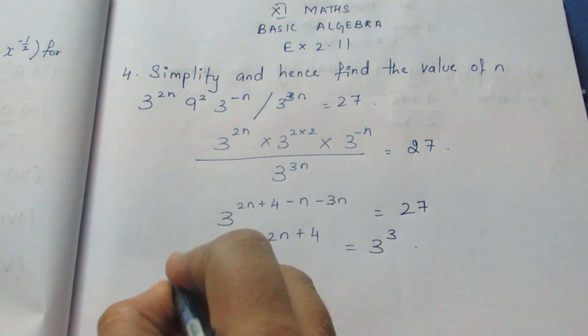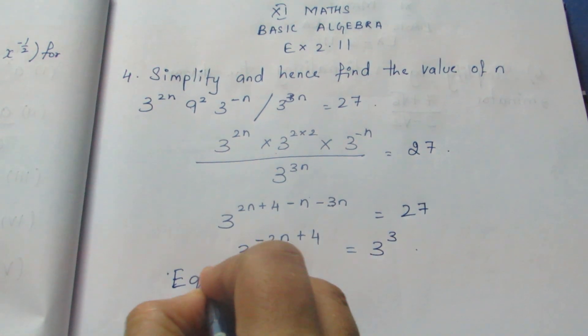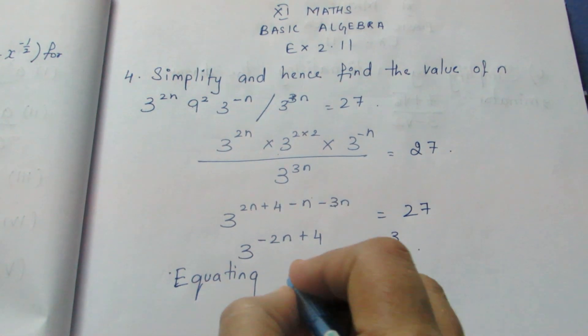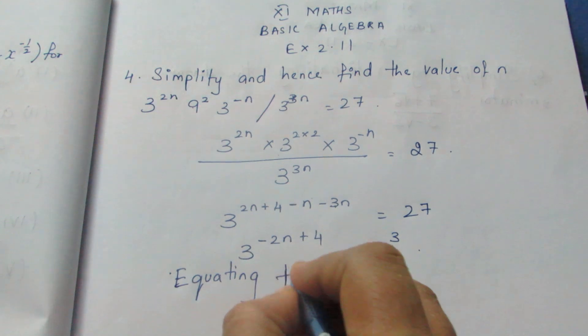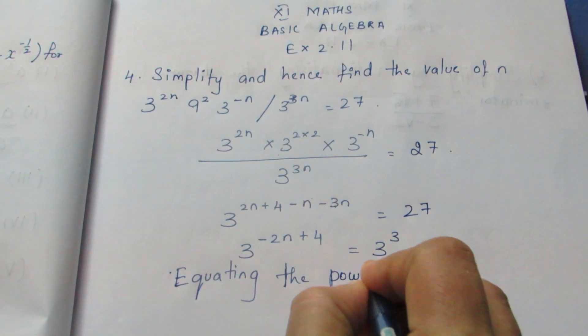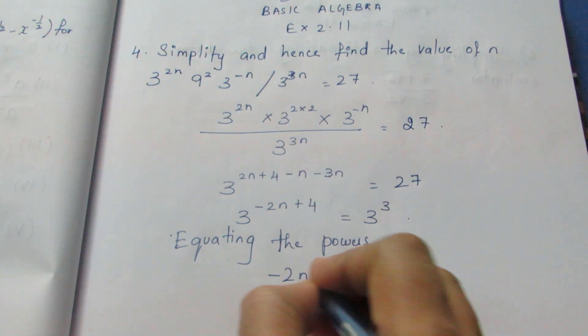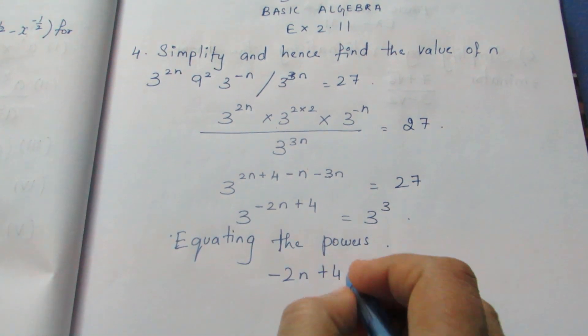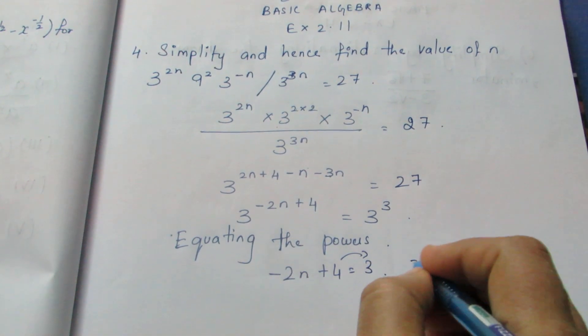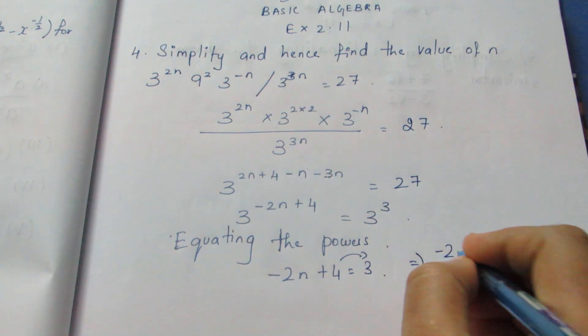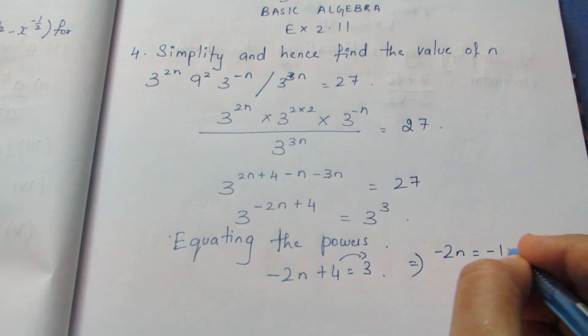Equating the powers, since the base is the same: minus 2n plus 4 equals 3. Moving 4 to the other side: minus 2n equals minus 1. Canceling the negatives, n equals half.